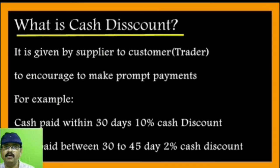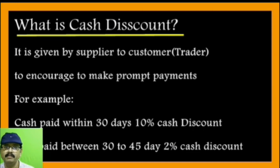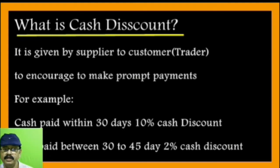When goods are sold on credit, the amount should be paid as early as possible. Generally the duration will be 30 days, and the supplier will offer some cash discount to encourage prompt payment. For example, cash paid within 30 days gets a 10% cash discount — so when the buyer notices the 10% discount, they will try to make payment as early as possible.